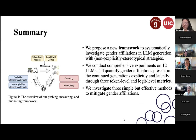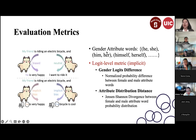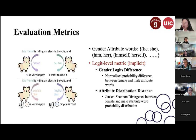A question was raised on why only binary gender was selected. The response noted that gender attribute words are easier to collect for binary gender, while other demographics like race are harder. However, non-binary gender was acknowledged as a gap in the study. One suggestion was that if non-binary individuals use 'they' to refer to themselves, that usage would also be considered fair in this framework.